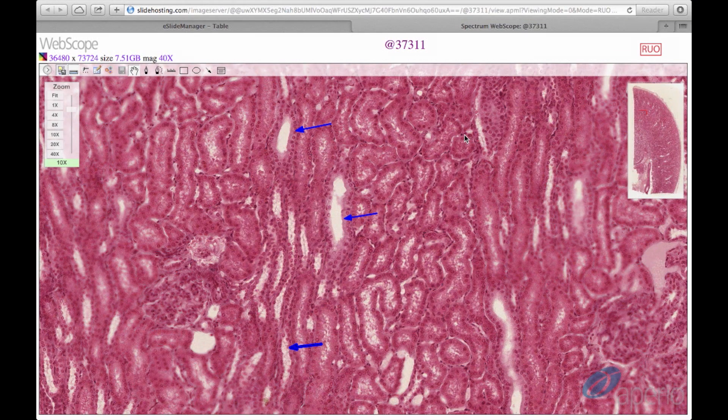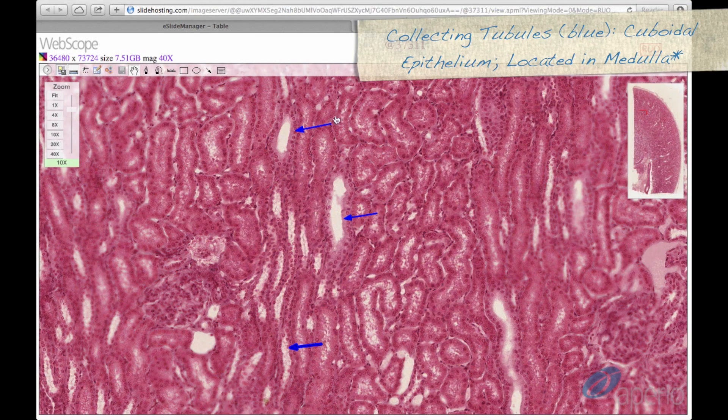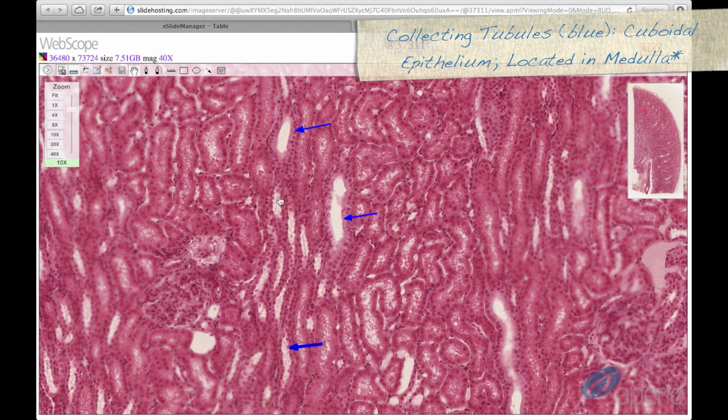Moving into the medullary ray, we can see the collecting tubules of the nephron here at the blue arrows. These have a cuboidal epithelium and are very similar to distal convoluted tubules in appearance. Location is what will allow you to differentiate between the two.